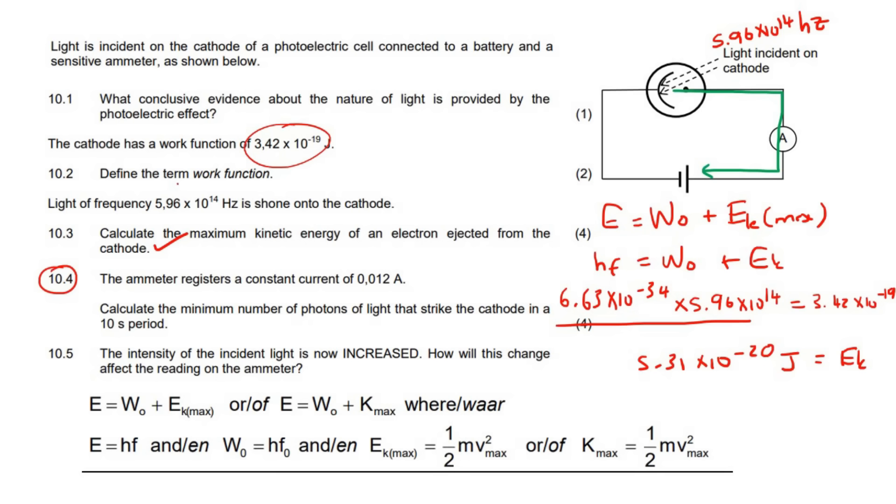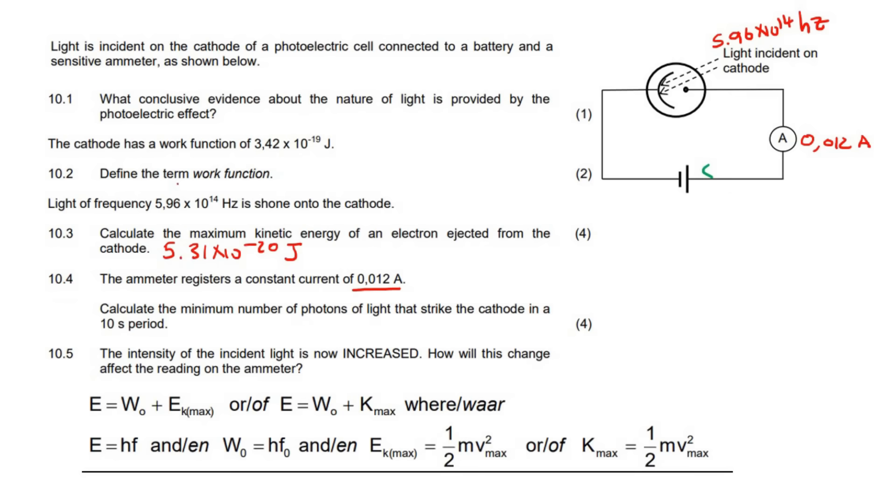Now, it says that the ammeter registers a current of 0.012 amps. Calculate the minimum number of photons of light that strike the cathode in a 10-second period. Well, one of our formulas for current is current equals charge divided by time. We could now take the current, which they've given us, and the amount of time, and work out how much charge is coming past.